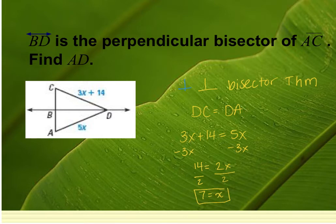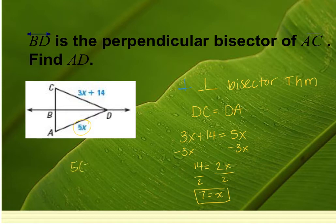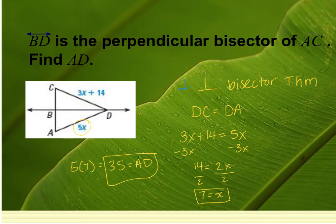Is x equals seven our answer? No — we need to plug it back in. We take five x and plug in x equals seven: five times seven equals 35, which is AD. Too many of us are still missing this on assessments — we find x and plug it back in. If it asks to find AD, x equals seven is not the answer; AD equals 35 is.